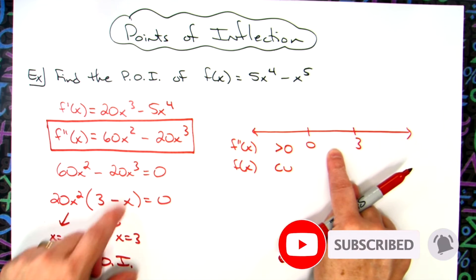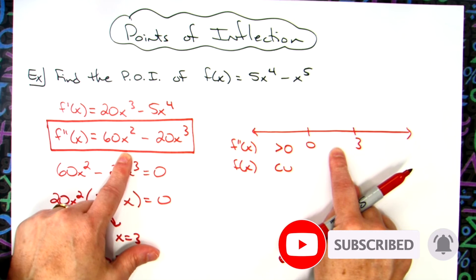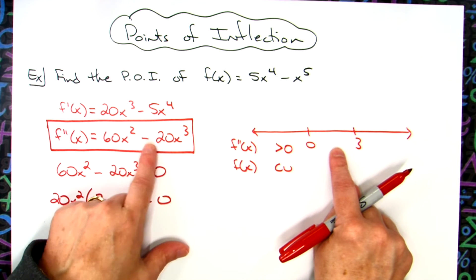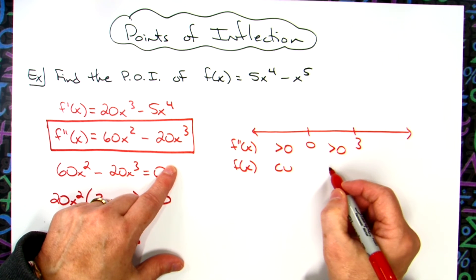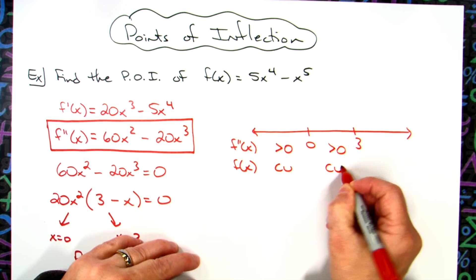Now I'm going to pick a number in here. I'm probably just going to pick one inside there because that'll be really easy. That'll give me 60 minus 20, so that's going to be positive greater than zero, which means my original function is going to be concave up again.